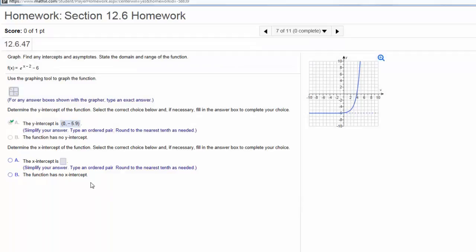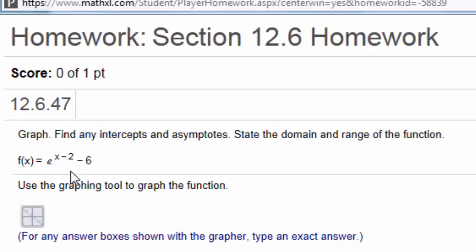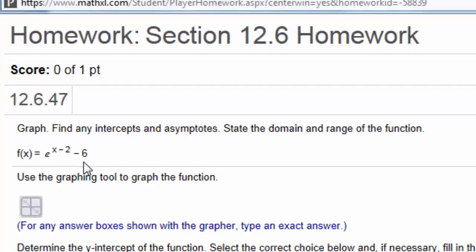Next problem, I needed the x-intercept. The x-intercept is where y is equal to 0. So I'm going to be solving e to the x minus 2 minus 6 equals 0. I isolate the exponential part by adding 6 to the right hand side. I take the natural log. That's going to leave me with x minus 2 equals ln of 6 and then I add 2 to the right hand side.